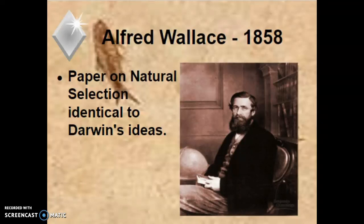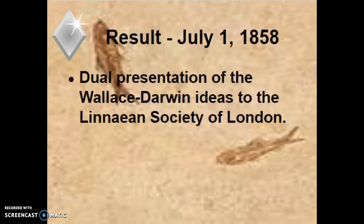Welcome back. This is part two of the chapter 22 AP Biology lecture. We left off talking about Darwin and his travels in the 1830s. In 1858, Alfred Wallace sent a paper to Darwin saying essentially, 'Look, I came up with the same ideas you did. You've done a lot of the legwork. Your evidence is more compelling than mine. But if you're not going to publish — it's been 20 years since you did your research — I will.' So essentially, July 1st of that year, they did a dual presentation to the Linnaean Society of London.